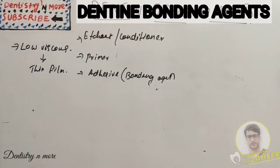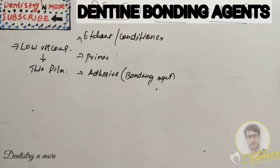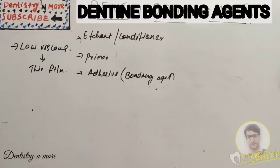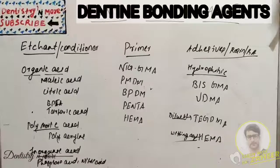The problem with dentin is that, unlike enamel, dentin is a dynamic tissue. It does not have as much mineral content as enamel. It shows changes due to aging, caries, or restorative procedures. It has dentinal tubules filled with dentinal fluid which constantly flows outward from the pulp. It has considerable organic matter and water, and it is close to the pulp, so different chemicals used for bonding or etching may irritate the pulp.